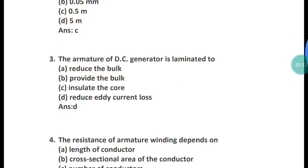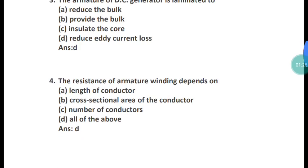Question 3: The armature of a DC generator is laminated to what? The armature of a DC generator is laminated to reduce the eddy current losses. The correct answer is option D — to reduce eddy current losses.